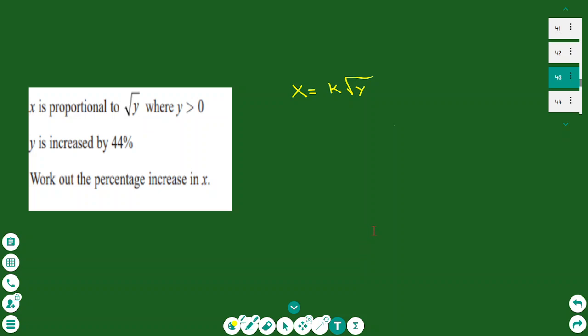So I write the equation as x is equal to k times the square root of y. And now y changes by 44%, it increases.